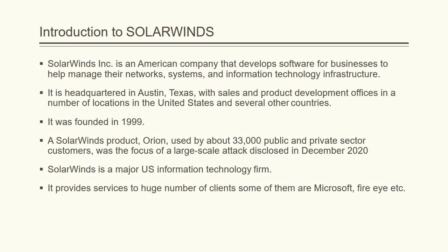First, you should know what SolarWinds actually is. It's an American company that develops software for businesses to help manage network systems and information technology. It is one of the biggest, or you can say a major, U.S. information technology firms, and it was founded in 1999 in Austin, Texas. SolarWinds has near about 33,000 public and private sector customers, and they sell their product Orion, which is used mainly for IT purposes.